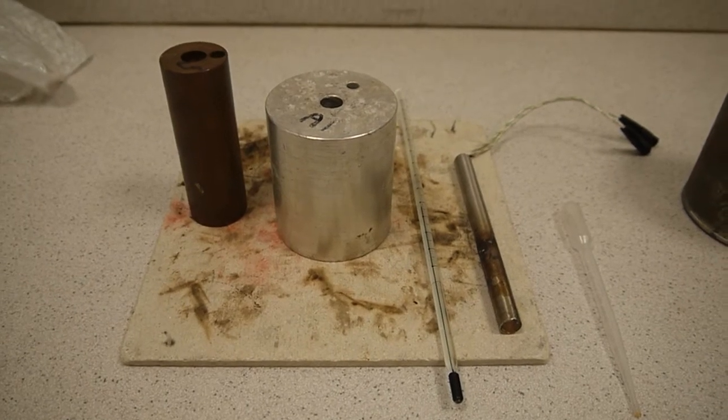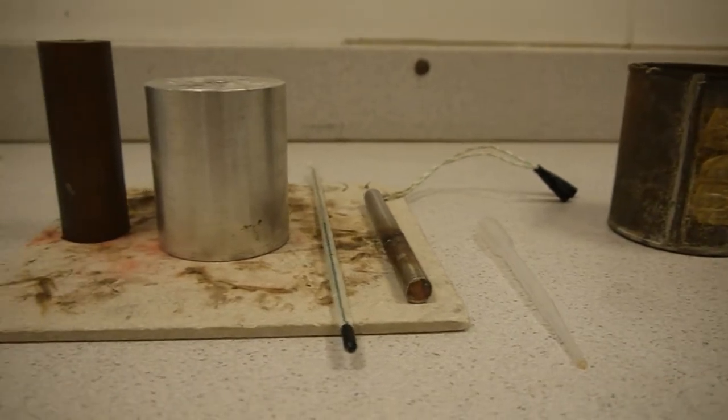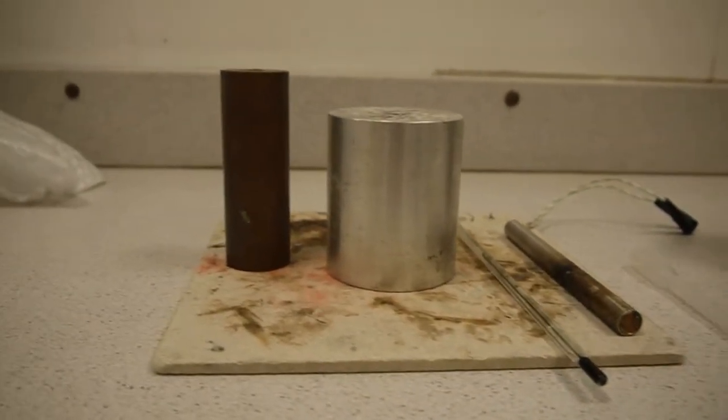This is a simple method for finding the specific heat capacity of metals. We use an immersion heater, a thermometer and a metal block.